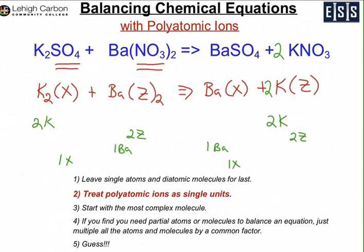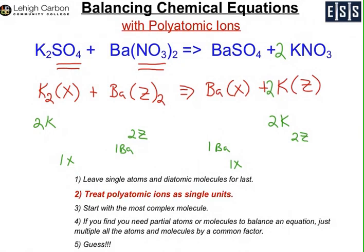Hopefully this will help you as you work with balancing chemical equations. As a further note, some of you may have recognized that this is a precipitation reaction. The products are barium sulfate and potassium nitrate. If you remember your solubility rules, nitrate is soluble in all forms, but barium combined with sulfate is insoluble. So if you were to do this reaction in a lab, you would form a precipitate with the barium sulfate.